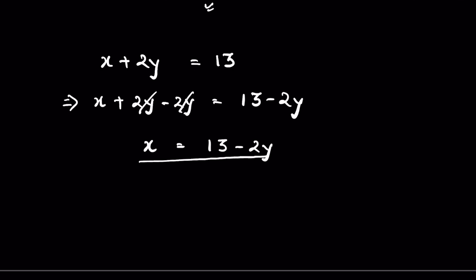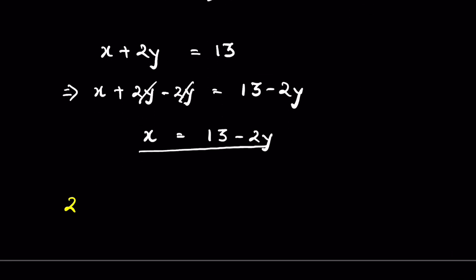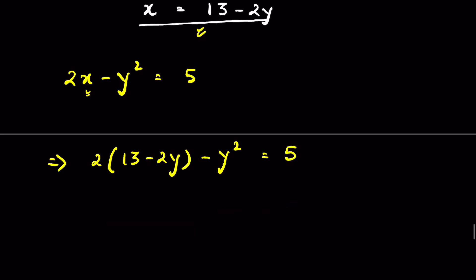The second equation is 2x minus y squared is equal to 5. Let's substitute the value of x from equation one: 2 times (13 minus 2y) minus y squared is equal to 5. Expanding: 13 times 2 is 26, and 2 times minus 2y is minus 4y, so we get 26 minus 4y minus y squared is equal to 5.